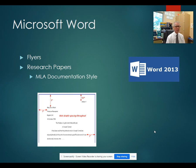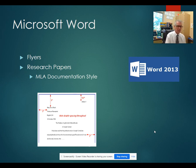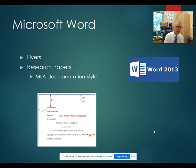In Word, we start off with a quick chapter on making flyers — that's just to break the ice, get them used to the ribbon in Word and where to find certain commands. But the big meat and potatoes of the Word chapter is teaching them how to format a research paper using the MLA documentation style, which is what our English department uses. They will do a research paper in their 11th grade year as well as their 12th grade year, so this is going to directly help them with that.